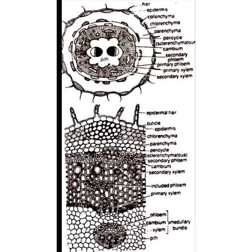The fifth tissue is the vascular system. In the young stem of Achyranthus, the vascular bundles are conjoint, collateral, open, and endarch. Conjoint means both xylem and phloem are present in the same vascular bundle. Collateral means xylem is present towards the centre and phloem towards the periphery. Open means cambium is present.